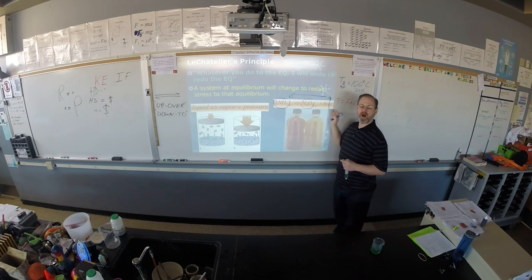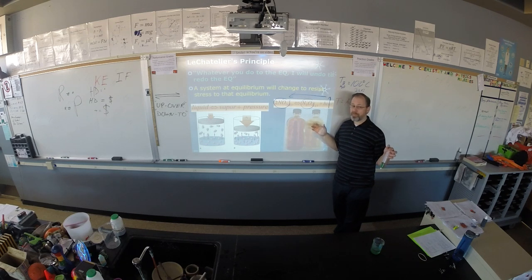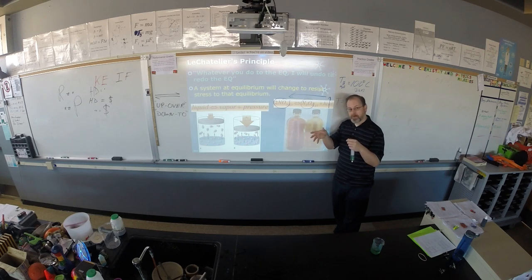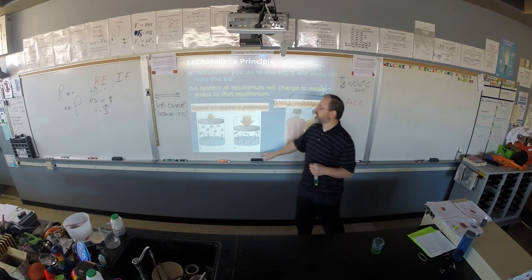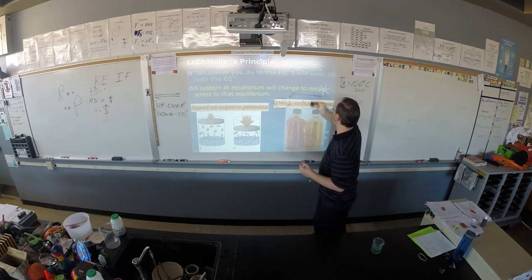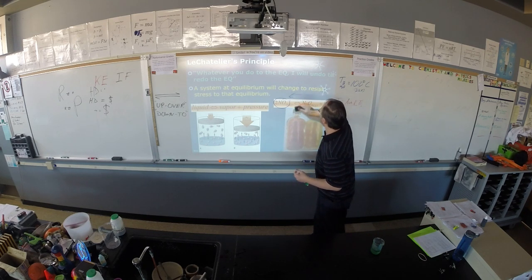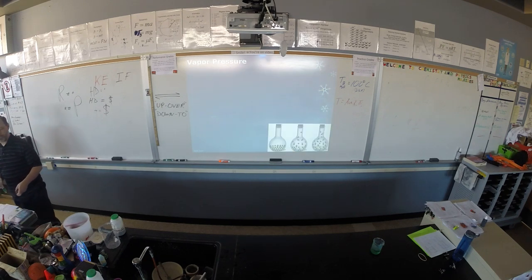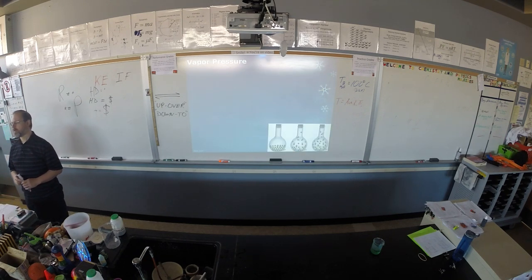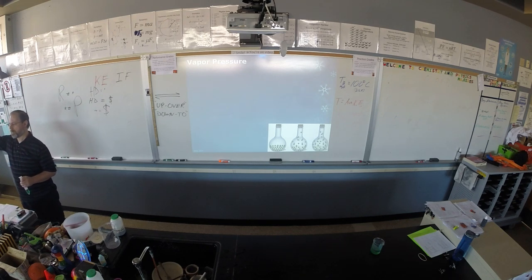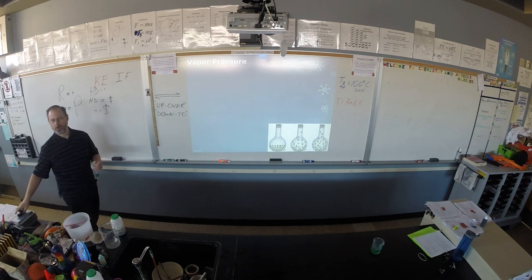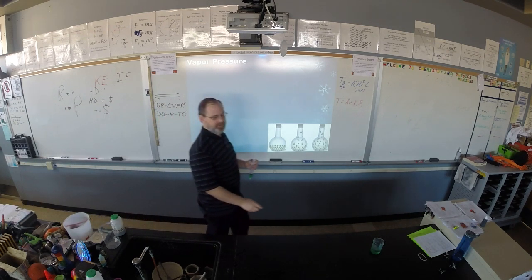So if you like book definitions, it works like this: a system in equilibrium will change to resist a stress in that equilibrium. What I like to think of — and it works pretty well — is remember: up and over, down in two. When you're changing something in equilibrium, I will show you what that means — up and over, down in two.